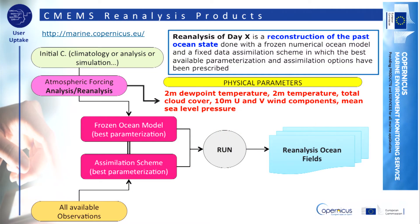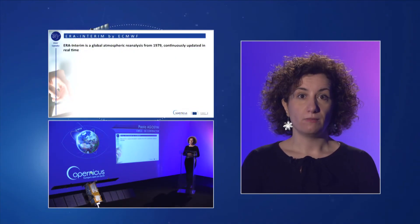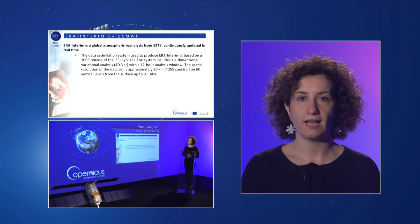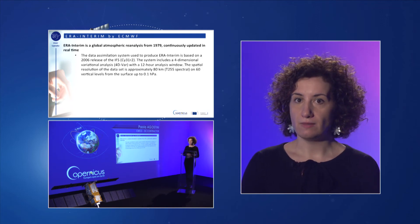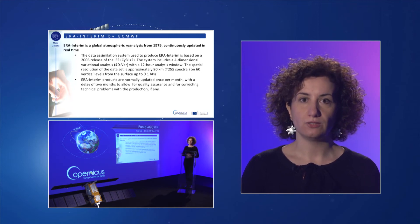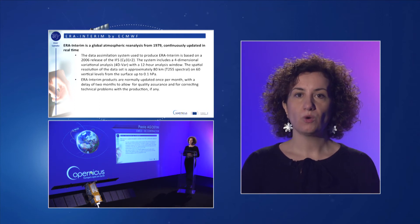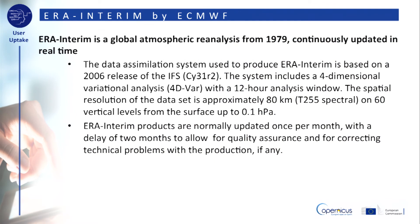The atmospheric forcing area includes physical parameters such as the 2 m dew point temperature, the 2 m temperature, the total cloud cover, the 10 m U and V wind components, and the mean sea level pressure, which rule the air-sea interactions. ERA Interim is available to users through the ECMWF catalogue. The reanalysis atmospheric data are available since 1979 and are produced using a 2006 release of the Integrated Forecasting System, which includes a 4-dimensional variational scheme for data assimilation with a 12-hour analysis window. ERA Interim data are updated once per month with a delay of 2 months to perform quality assurance.